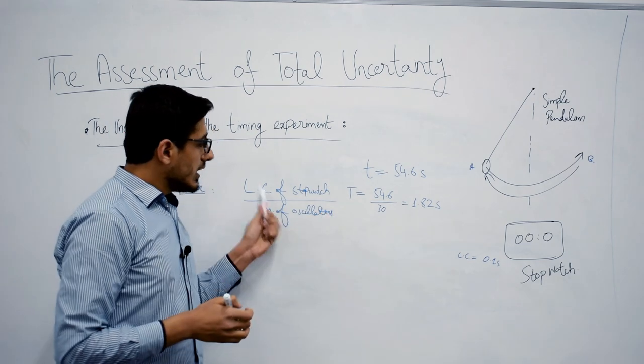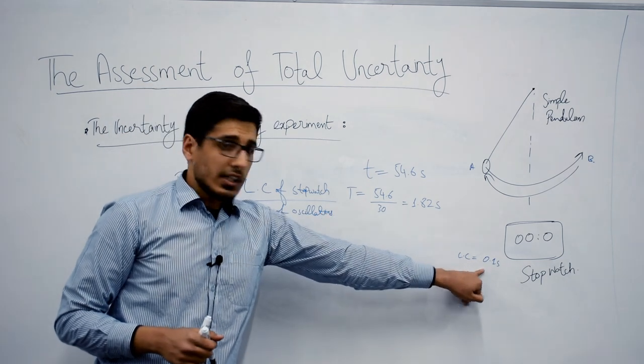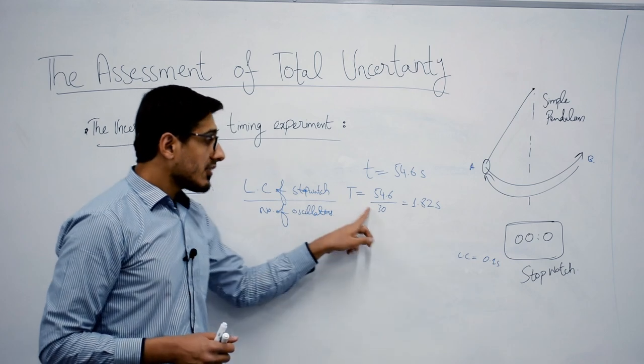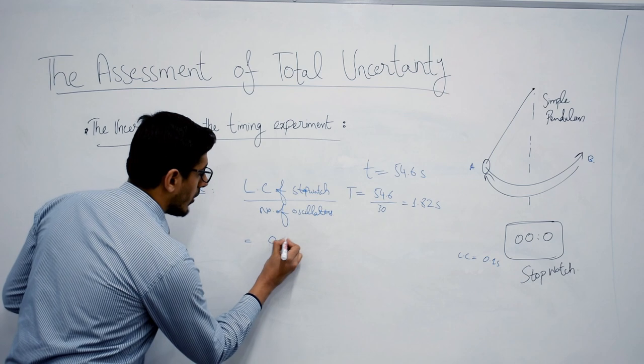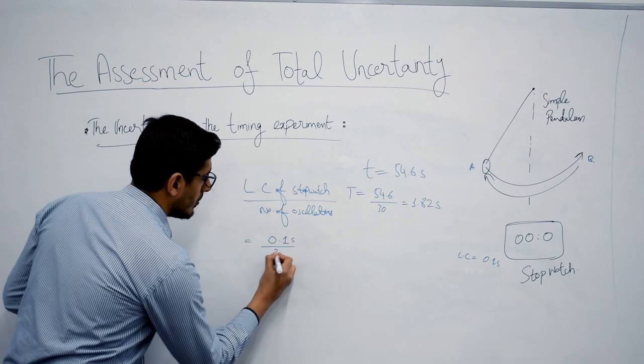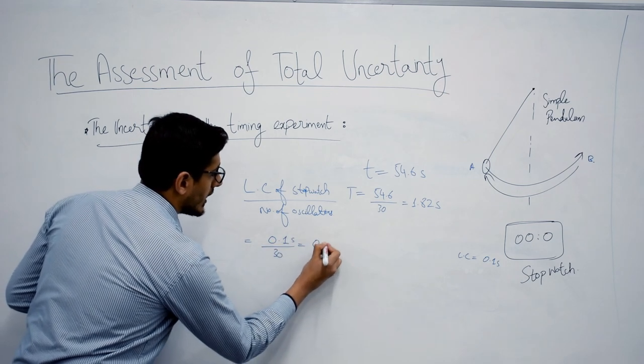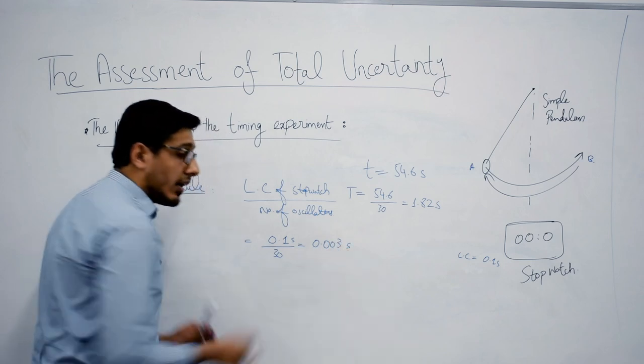Now in this case, the least count of stopwatch is 0.1 second and the total number of oscillations are 30. So what you are going to do is divide 0.1 second by 30, and what you are going to get is 0.003 second.